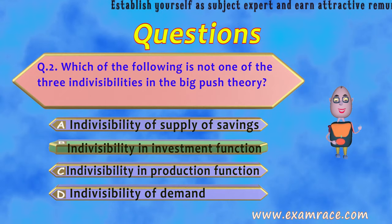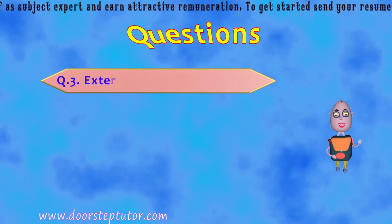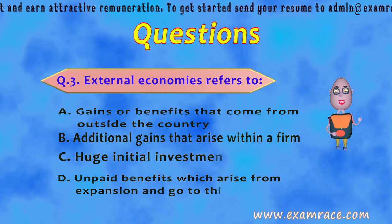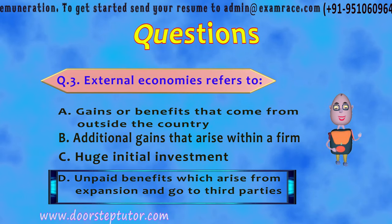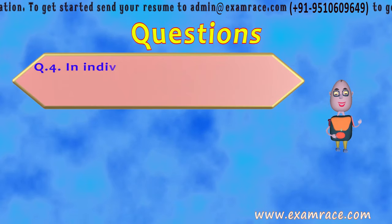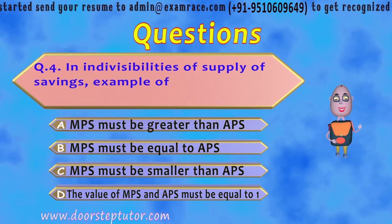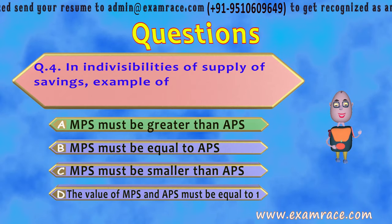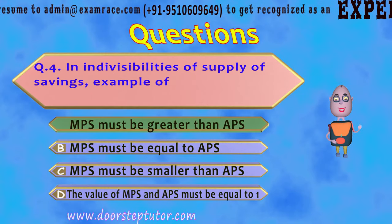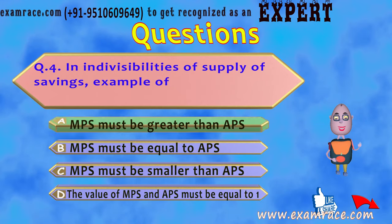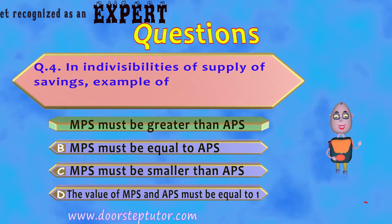Question 3: External economies refers to — the correct option is unpaid benefits which arise from expansion and go to third parties. Question 4: In indivisibilities of supply of savings, the correct option is that marginal propensity to save must be greater than average propensity to save; otherwise the level of savings cannot be increased in less developed or underdeveloped countries.